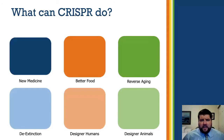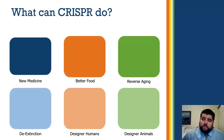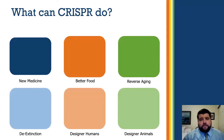What can CRISPR-Cas9 do? It's going to be able to create new medicine, make us better food, and reverse aging or stop the process of aging — so we can maybe become elves. It'll allow us to produce animals which have been extinct, so de-extinction. Ethically, it'll also allow us to design humans to be better, faster, stronger, and smarter, and to have designer animals, which can have far-ranging effects.